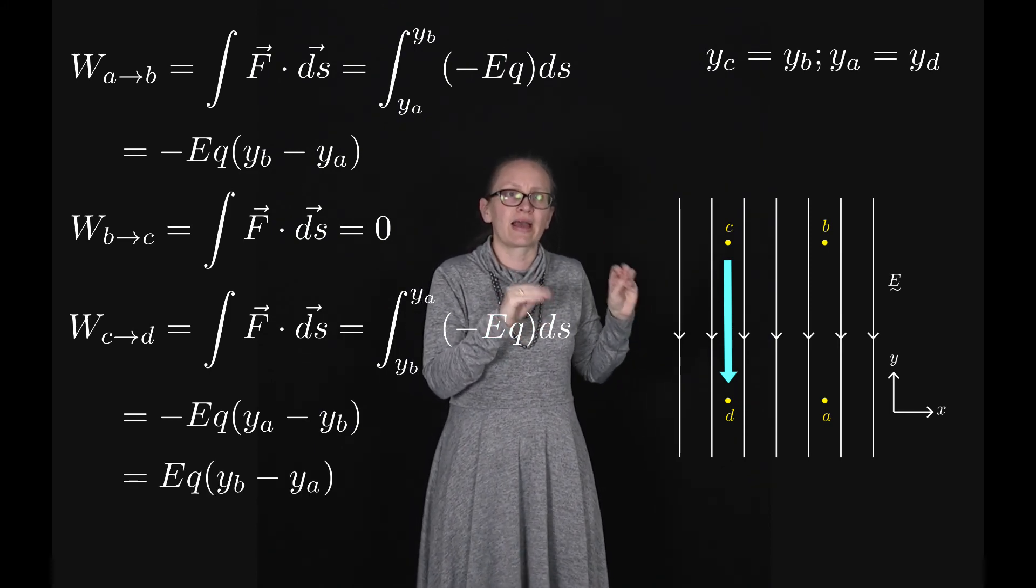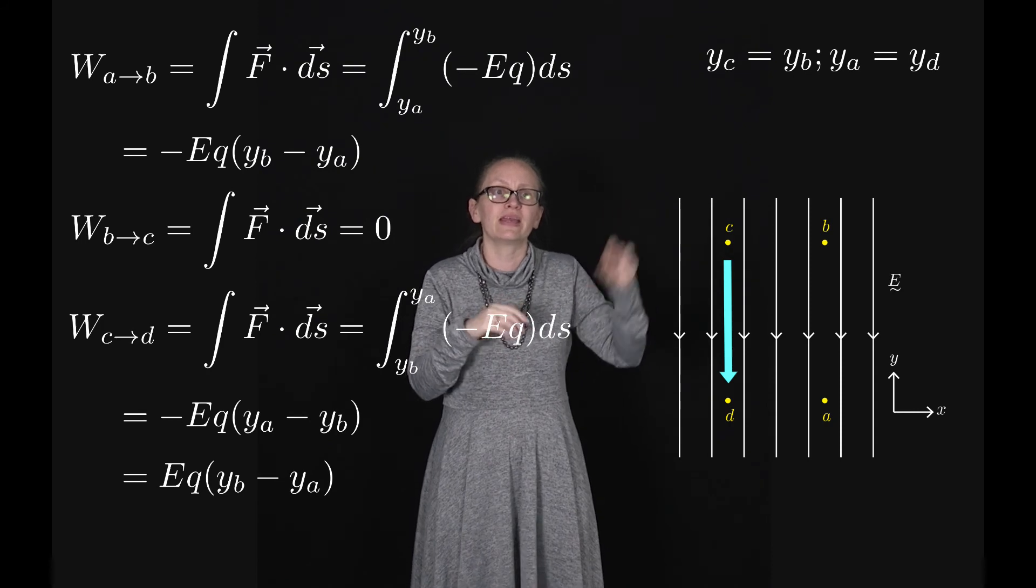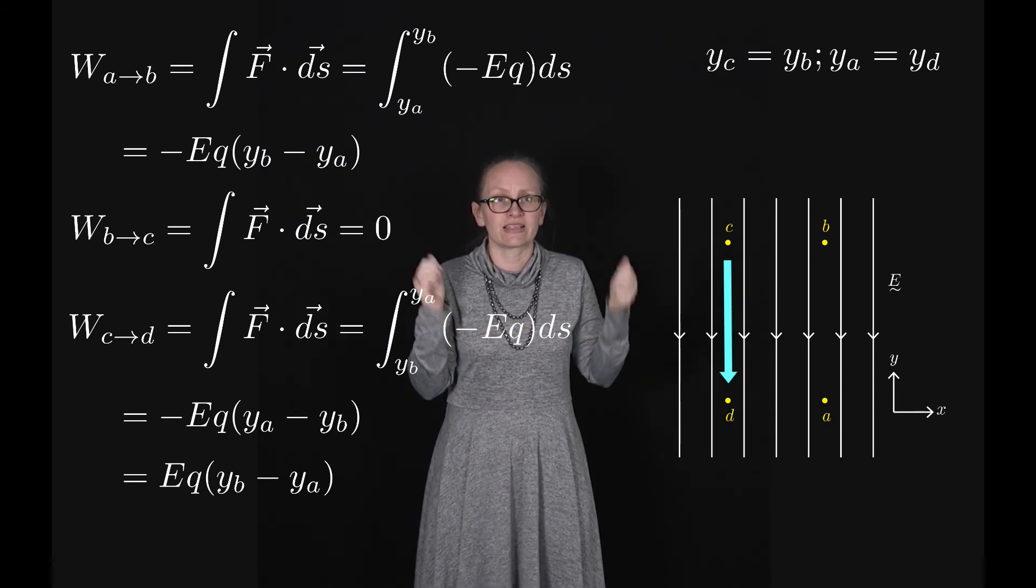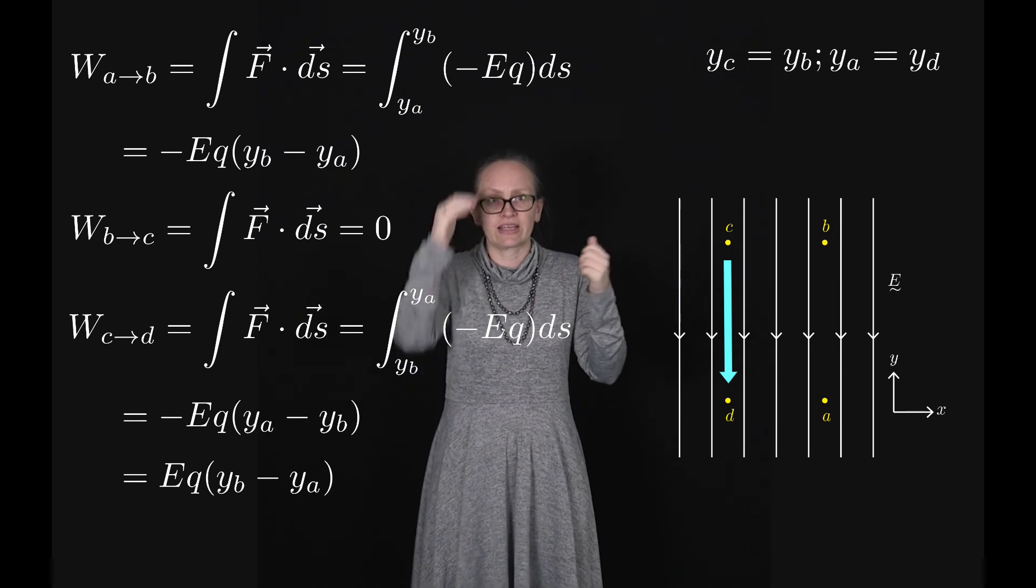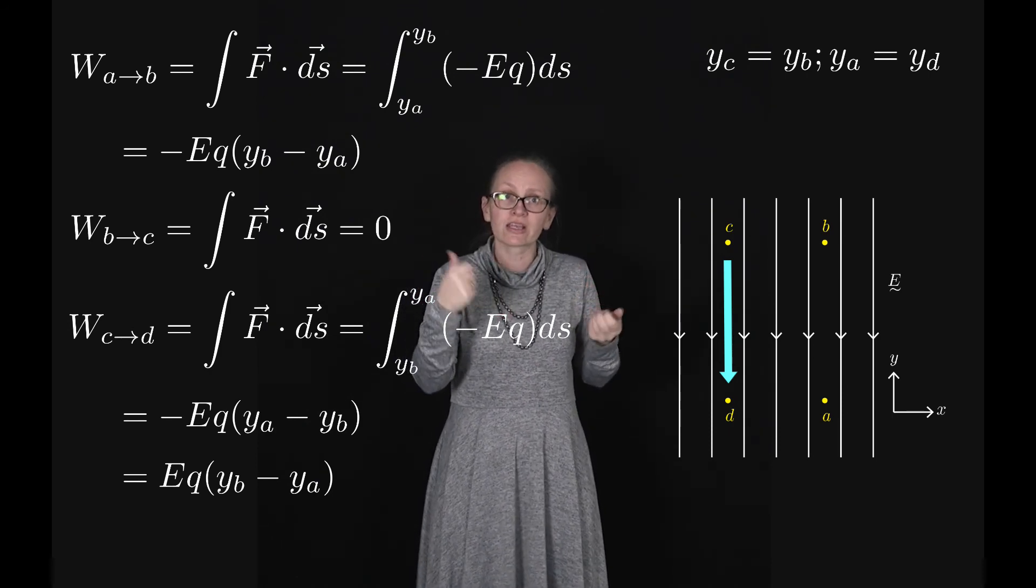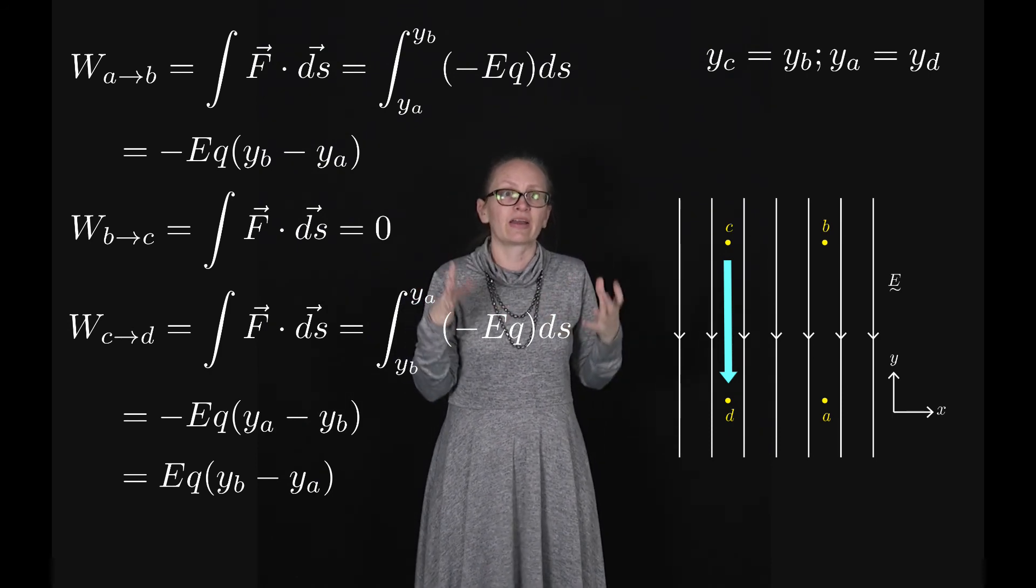So this has got the same magnitude as going from A to B but it's got the opposite sign. So in this case this is positive because the electric field, the electric force and the displacement are in the same direction.